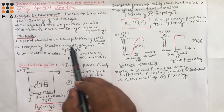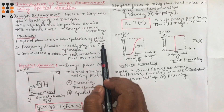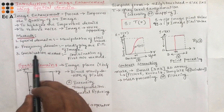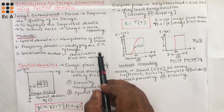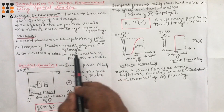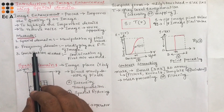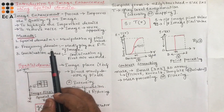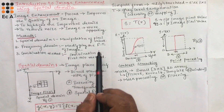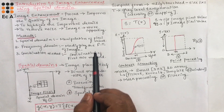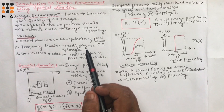The spatial domain deals with direct manipulation of pixel values. The frequency domain deals with modifying the Fourier transform of the image. In this frequency domain, the image will be converted from spatial domain to frequency domain, then it is processed using Fourier transform, and after processing, the image is converted back to spatial domain.